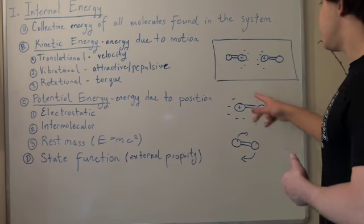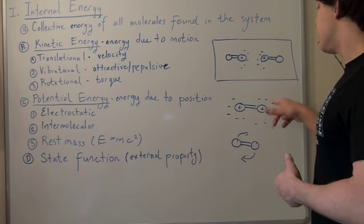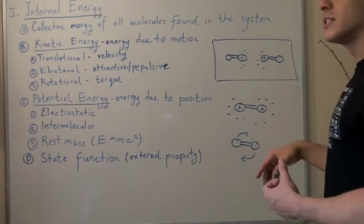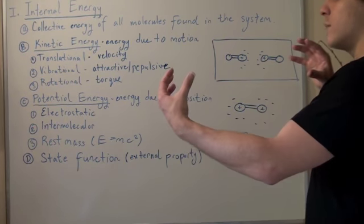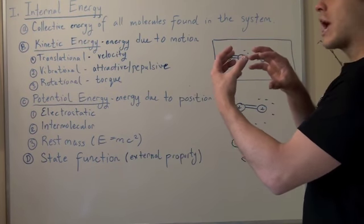But notice that each one has an electron cloud around it. And this guy will attract these guys. And this guy will attract these guys. So this will create a motion, a reverse motion. Instead of repelling, they want to attract.